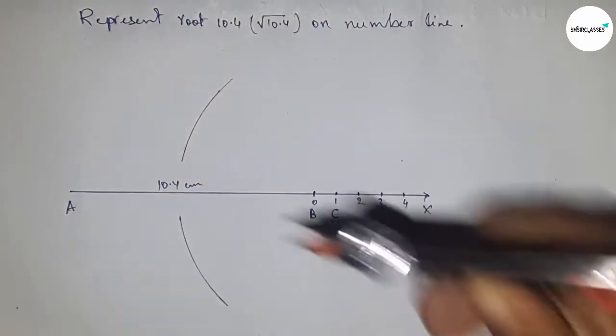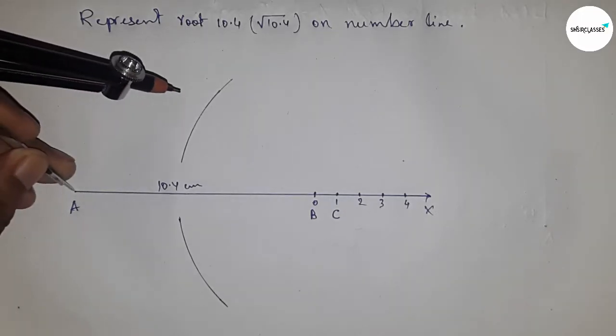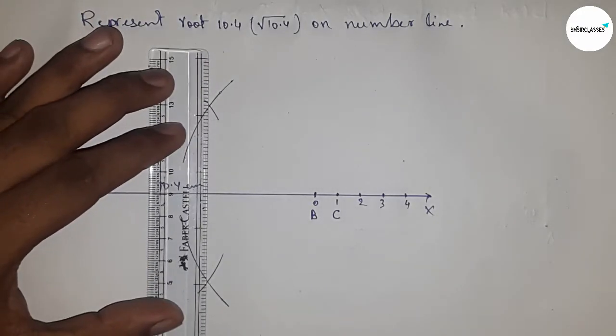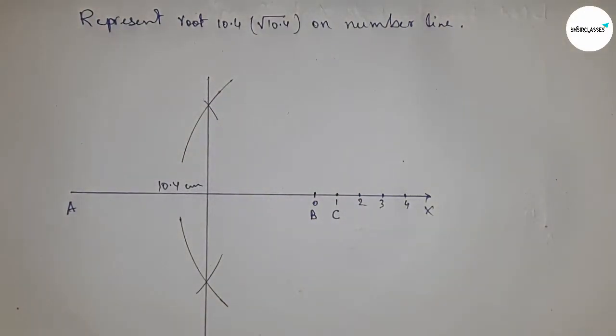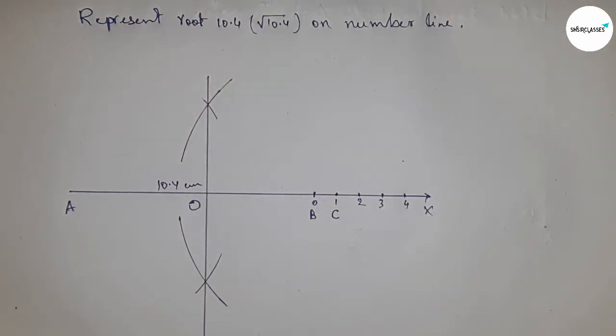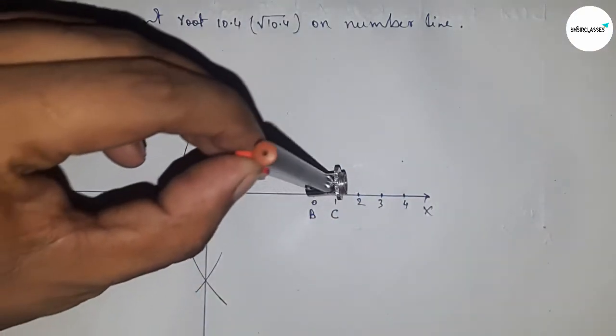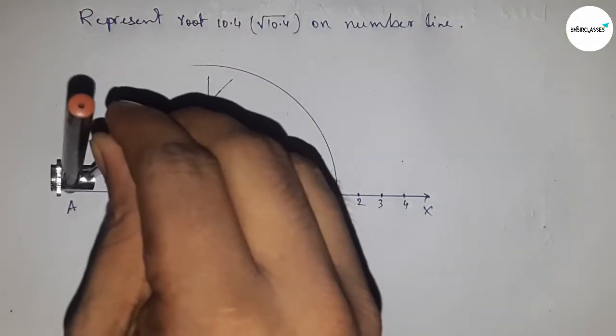Putting the compass here and cutting the AX. Next, joining where they meet at the point O. Now taking the length OA and OC to draw a semicircle through the points A and C.